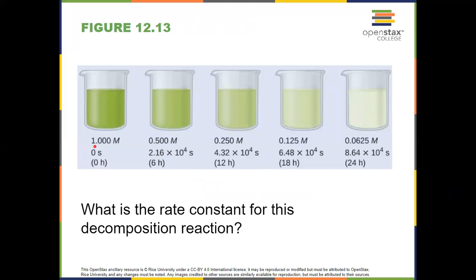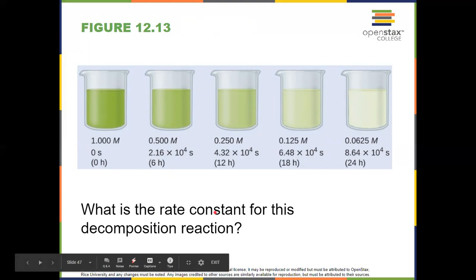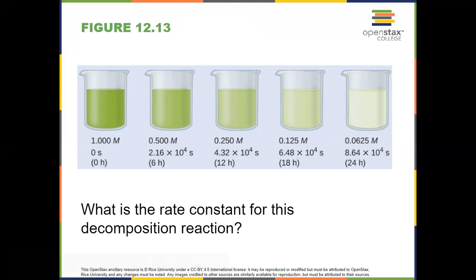Here's a visual representation: starting with 1 molar, 50% is gone each half-life. The half-life shown is six hours. An example test question asks for the rate constant in inverse seconds. Using T-half equals 0.693 divided by T, you need to convert six hours to seconds first. The final answer is 3.21 times 10 to the negative fifth inverse seconds.